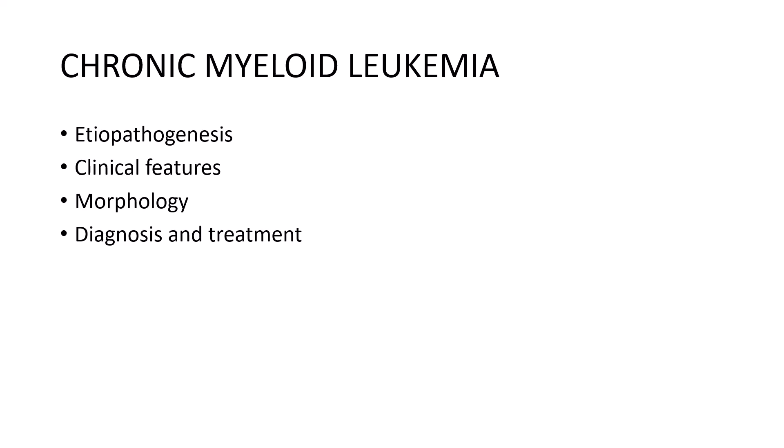That's about chronic myeloid leukemia. I hope the concepts are clear — it's a very important myeloproliferative neoplasm. In an earlier session, I had talked about differences between myeloproliferative neoplasms versus myelodysplastic neoplasms. Important myeloproliferative neoplasms include CML, essential thrombocytosis, polycythemia vera, and so on. Today we discussed in detail about chronic myeloid leukemia, and in subsequent sessions I'll be discussing the other myeloproliferative neoplasms as well.